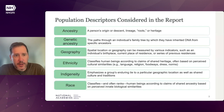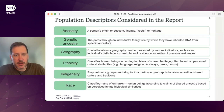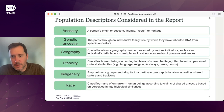The NASEM report in terms of population descriptors considered several different categories of descriptors from ancestry broadly defined, genetic ancestry more specifically, geography, ethnicity, indigeneity, and race.